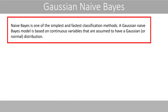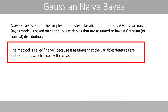Naive Bayes is one of the simplest and fastest classification methods. A Gaussian Naive Bayes model is based on continuous variables that are assumed to have a Gaussian distribution. The method is called Naive because it assumes that the variables or features are independent, which is rarely the case.